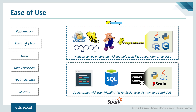Yarn is a processing framework that can be integrated with multiple tools like Hive and Pig for analytics. Hive is a data warehousing component which performs reading, writing, and managing large datasets in a distributed environment using a SQL-like interface. To conclude, both Hadoop and Spark have their own ways of making themselves user-friendly.